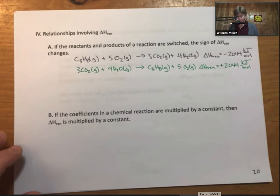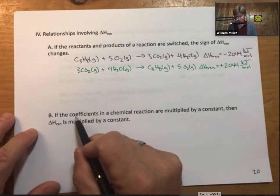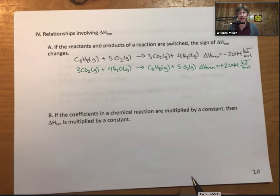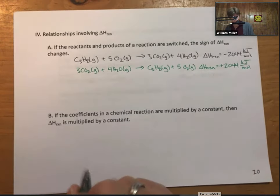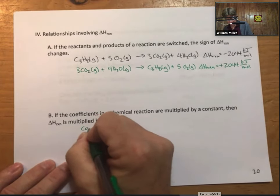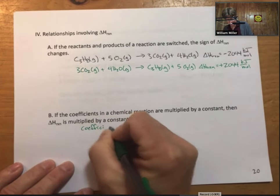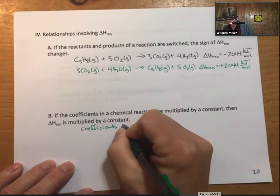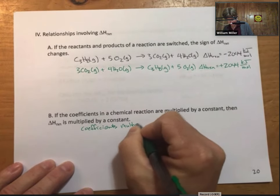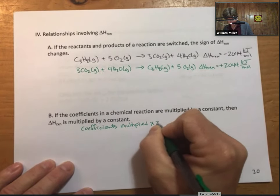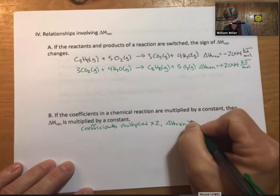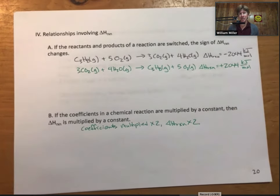Okay, so by that same way, if the coefficients in a chemical reaction are multiplied by a constant, then delta H reaction is multiplied by a constant. So if the coefficients are multiplied times 2,